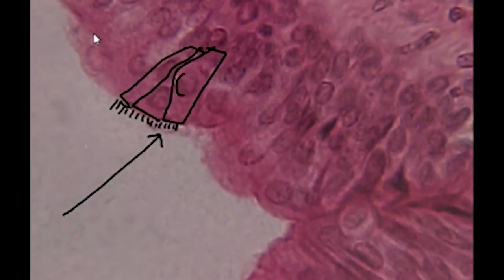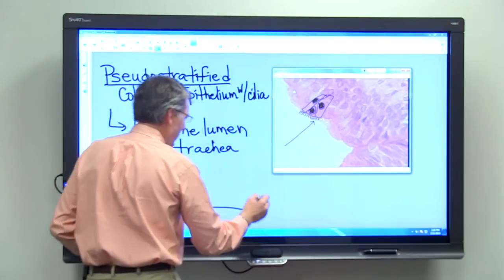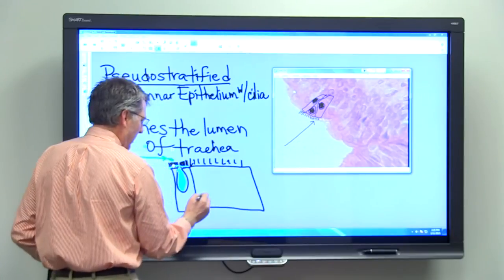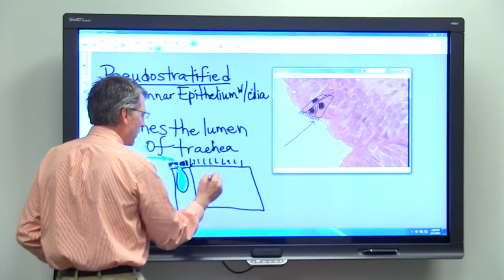Here's the nucleus of one cell. You can see it's sort of in the middle of the cell. Here's a nucleus of another cell that's more towards the top, and here's a nucleus of another cell. When we look at this tissue under the microscope, we may have a nucleus here...